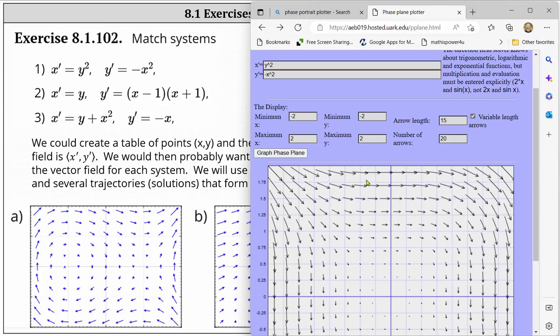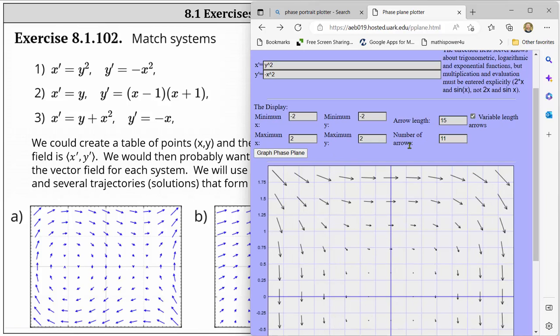So that looks better but let's also change the density of the slope field by changing the number of arrows from 20 to 11. And again click graph phase plane. We can also change the arrow length if we want. Let's change that to 20 just to see what it does. And click graph phase plane. And this looks pretty good.